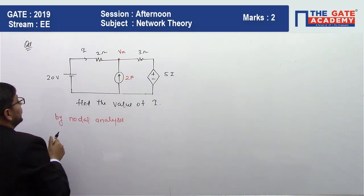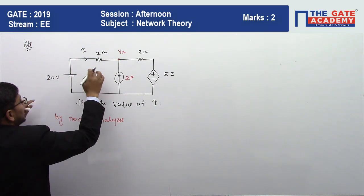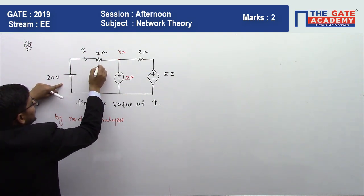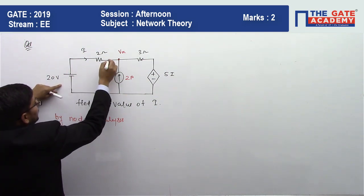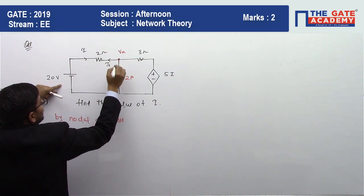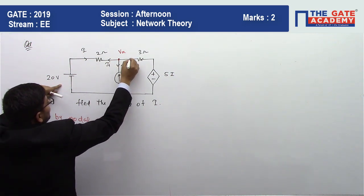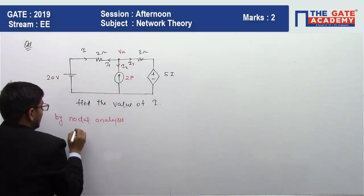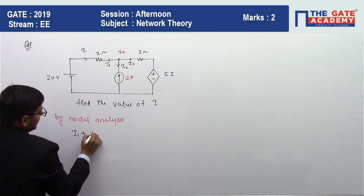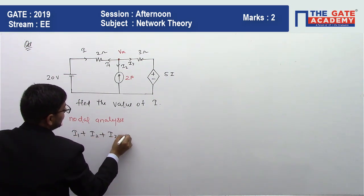Suppose one current flows from there. This is I1, this is I2, and this is I3. It means I1 plus I2 plus I3 equals...